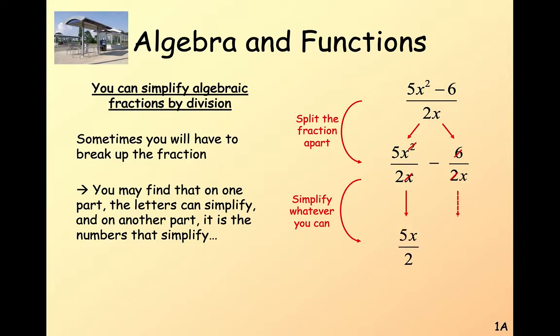So if we cancel on the left-hand, the X's, we just end up with 5X over 2. And on the right-hand, we divide by 2. Cancel a 2 out.